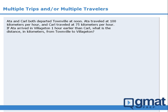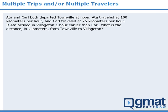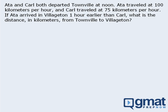In this lesson, we will learn how to solve motion questions where there are multiple trips or multiple travelers. In this example, there are two separate travelers, Ada and Carl, who are both traveling from Townville to Villagetan. We are told the speed of each traveler, and we are told that Ada arrives in Villagetan one hour before Carl does. Our goal is to determine the distance from Townville to Villagetan.